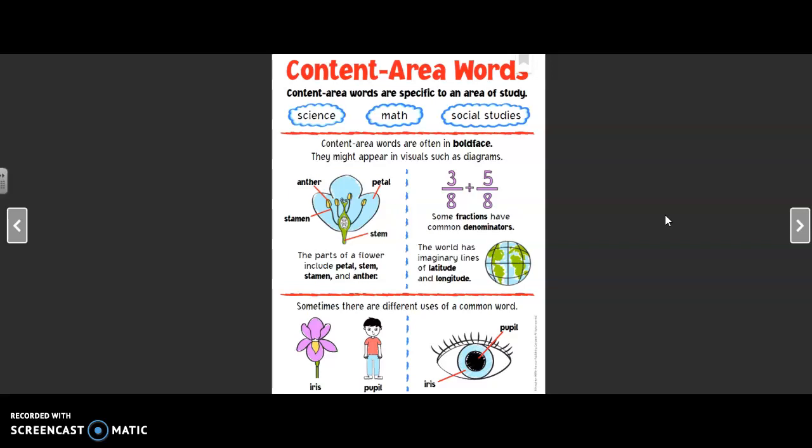Magnetism and gravity are content area words that you might see in science. And sometimes there are different uses of a common word. Like an iris is a flower and a pupil is a student, but if we're talking about eyes, the iris is the colored part and the pupil is the black part, so it might be a content area word that has multiple meanings.